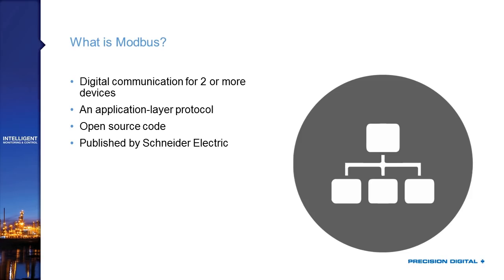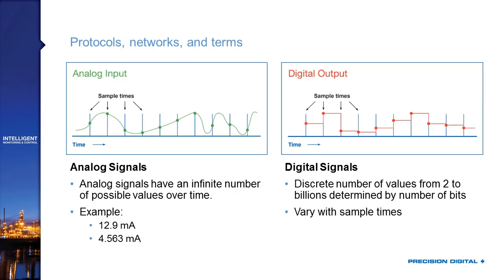Since Modbus is a digital communication protocol, it's worth understanding the difference between digital and analog signals. An analog signal — like the popular 4-20 mA standard — can take an infinite number of values between its range. For example, you could have 12.01 or 12.02 mA, and in a pure analog signal you've really got any number of decimal places. The signal fluctuates continuously over time.